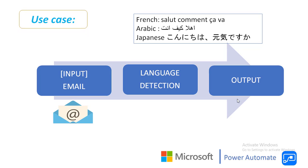Let me show you a small example. In a real-time scenario, we get emails in different languages — for customer support, mails arrive from different countries in their country-specific language. We need to detect that language, store the text along with the detected language using the language detection model available in AI Builder, and then show the output. This is our small use case.